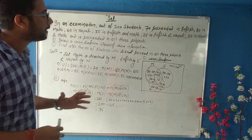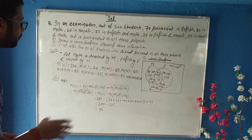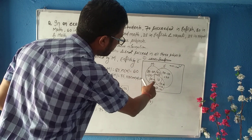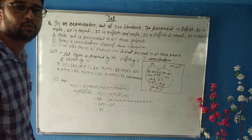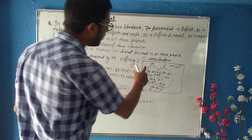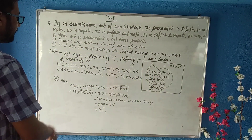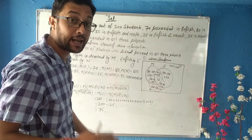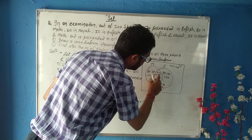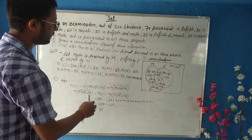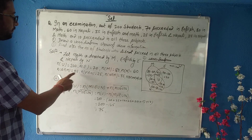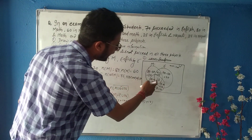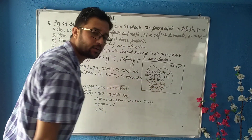Now we represent this in the Venn diagram. For the intersection regions, we subtract the all-three value. E∩M only = 35 minus 10 = 25. E∩N only = 25 minus 10 = 15.